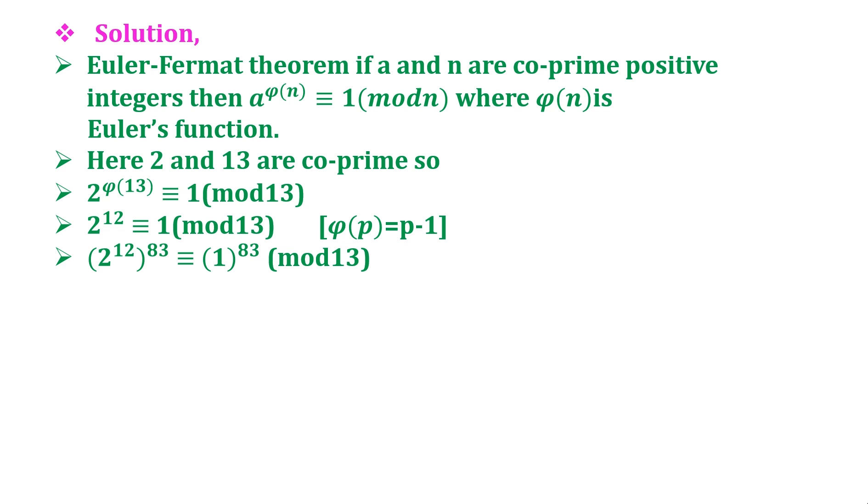Therefore, taking 83 power on both sides, we get 2 raised to 12 times 83 is congruent to 1 raised to 83, which equals 2 raised to 996 is congruent to 1 mod 13.